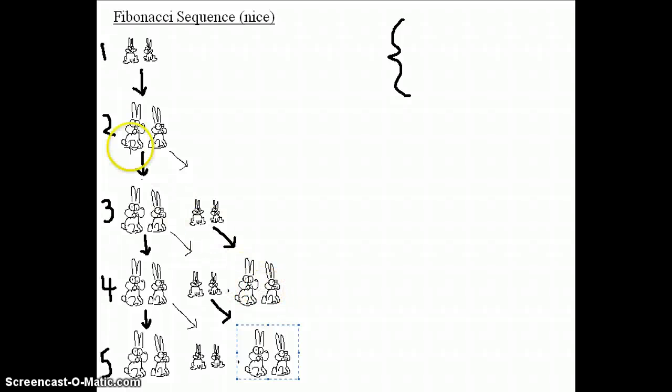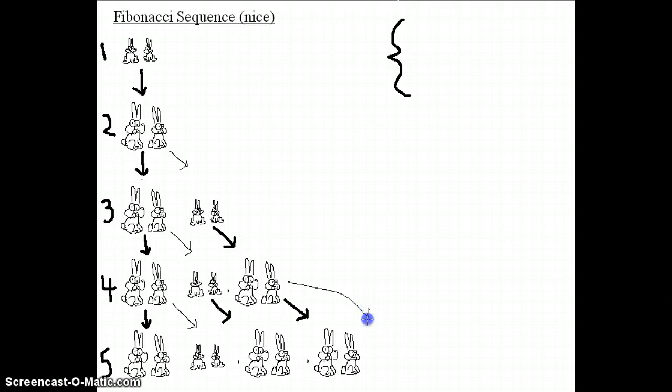So let's back up here. This pair of adult rabbits, because rabbits are immortal, they're still there during month number 5, aren't they? So I'm going to represent that fact by bringing them down here. But let's not forget that they reproduce as well. So I've got the thin arrow.